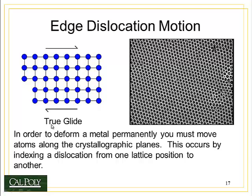So what's a better mechanism? The better mechanism is called true glide. We're going to introduce a dislocation into a perfect crystal — you'll see it appear as red in the video. Watch how that defect, or mistake in the crystal, moves from the left of the crystal to the right as we apply shear stress. It's the defect that's moving, not the atoms. If you watch the atoms carefully, they're moving very short distances, but the defect moves completely from the left side of the crystal to the right side.